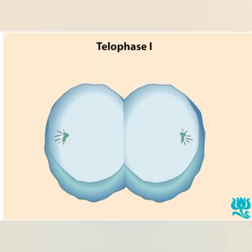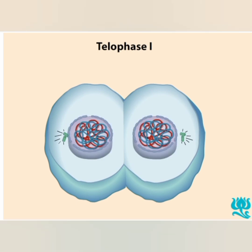In some species, telophase 1 occurs, a stage in which chromosomes decondense, nuclear membranes reform, and the cytoplasm divides in a process called cytokinesis. A short interphase period called interkinesis may then follow telophase 1. Note that DNA replication does not take place during interkinesis.